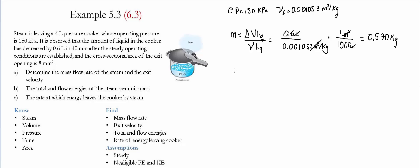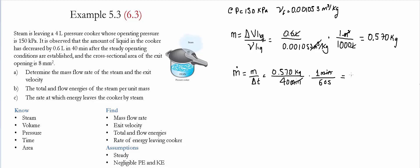The next step is to calculate the mass flow rate. Mass flow rate is simply the mass divided by the elapsed time. The mass was 0.570 kilograms and the elapsed time was 40 minutes, converted to seconds using 60 seconds per minute. The resulting mass flow rate is 2.37 times 10 to the negative 4 kilograms per second.